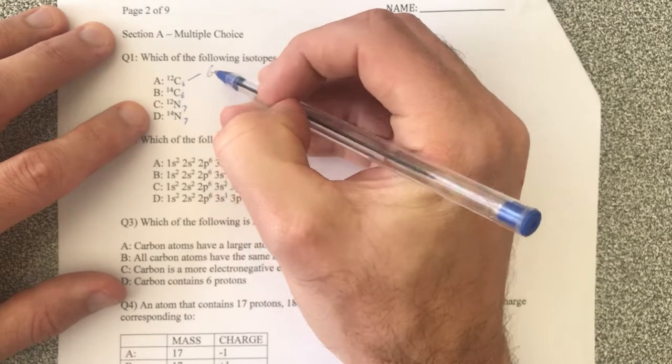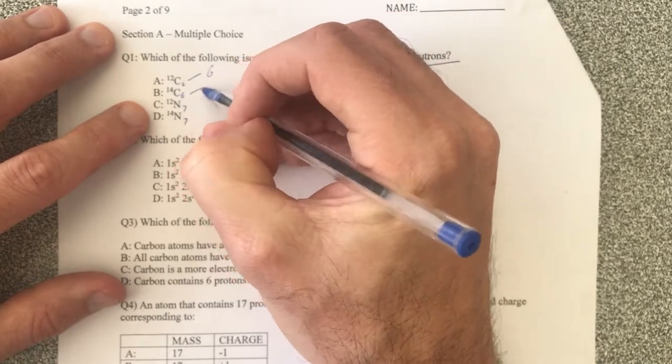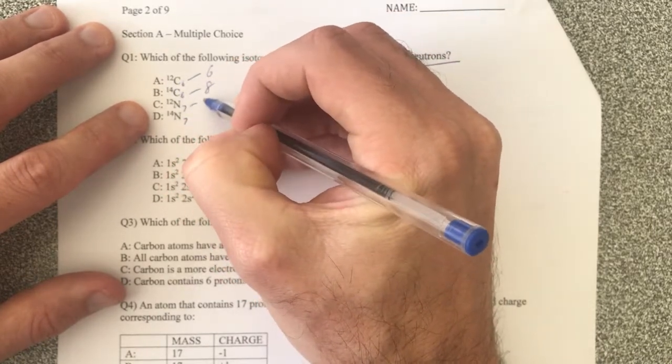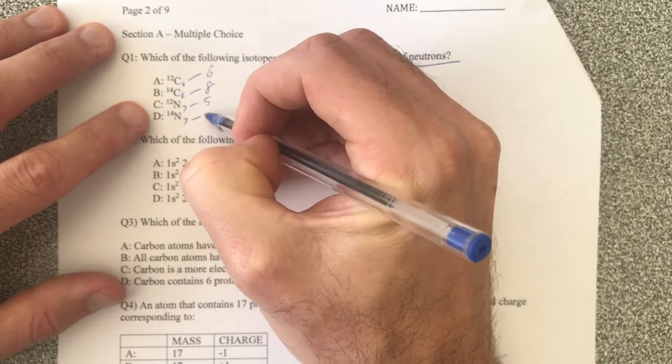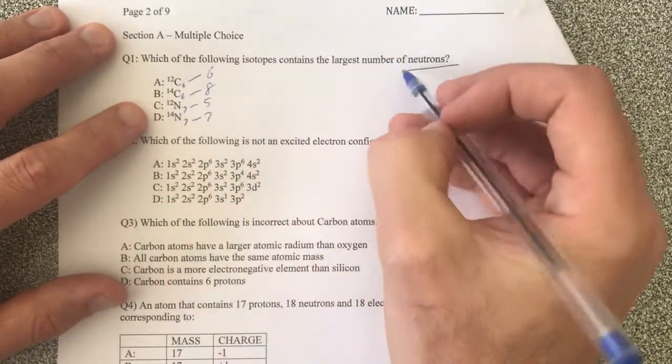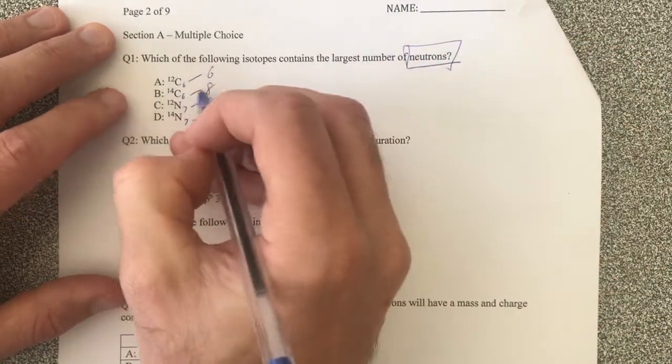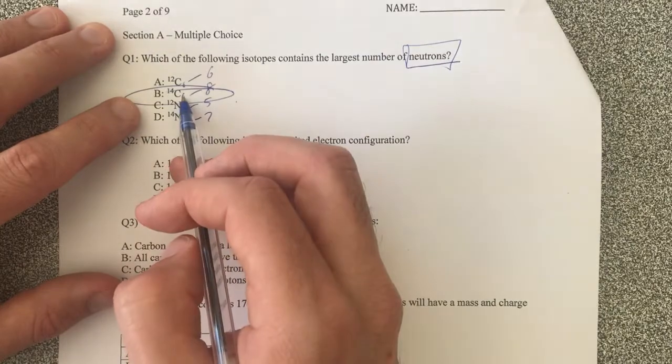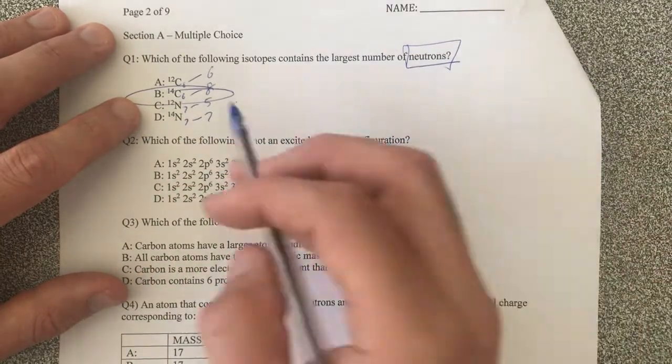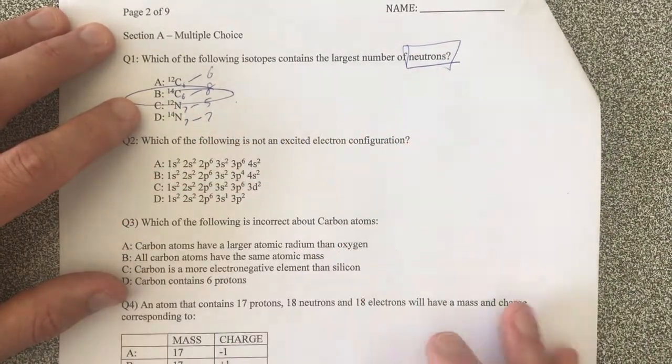Well this carbon has six neutrons because the difference is six, this one's going to have eight, this guy's going to have five and this guy's going to have seven. So the one with the largest number of neutrons is going to be carbon 14 because the difference between the atomic number which is found from the periodic table and the mass number is the largest.